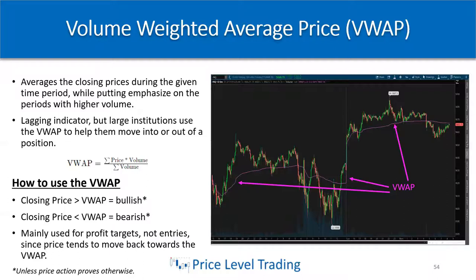VWAP is a lagging indicator, but large institutions use it quite a bit to help them move into or out of a position. It provides liquidity for the bigger funds to enter and exit their trades, so this is where most of the volume is happening for the day. When the closing price is greater than the VWAP, it's typically bullish; when the closing price is below the VWAP, it's typically bearish. However, price action should always confirm this.